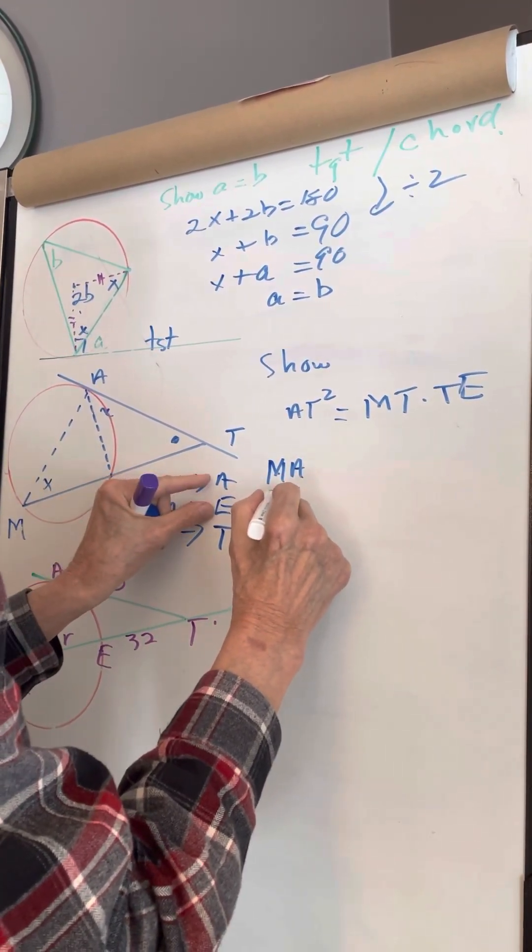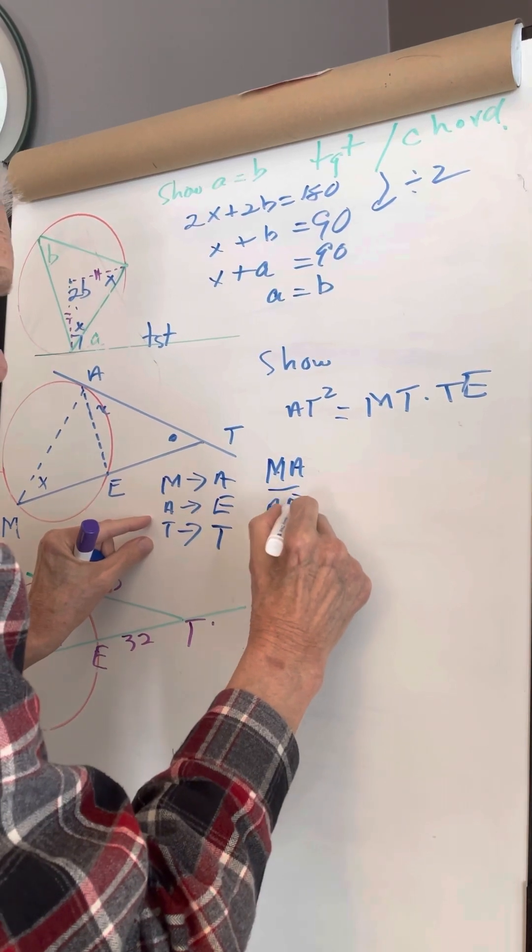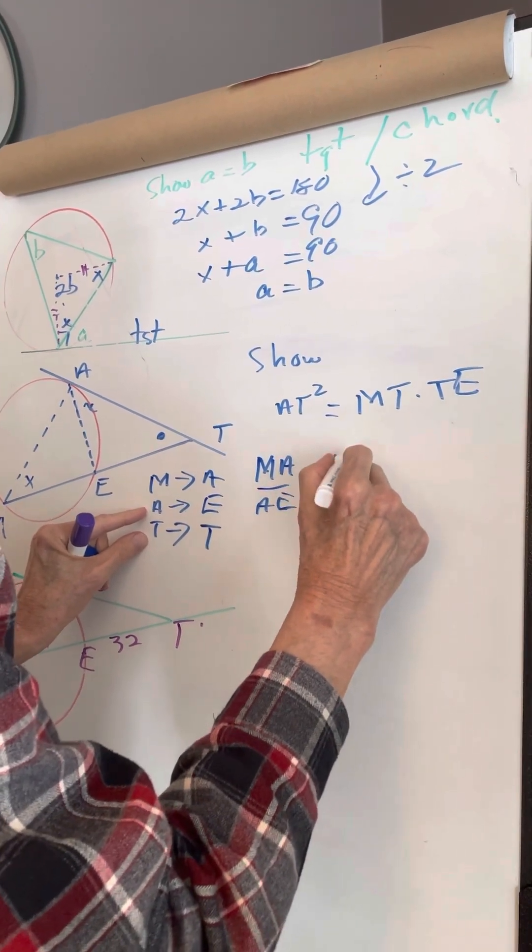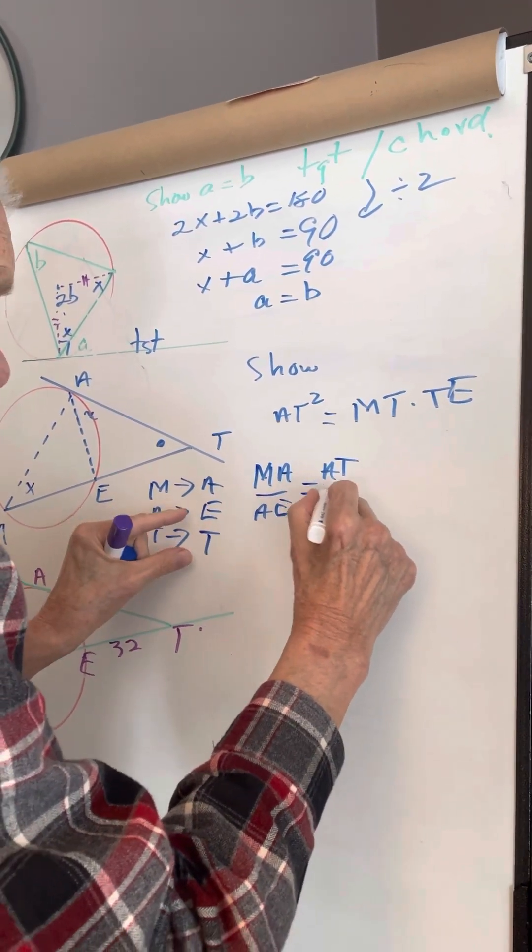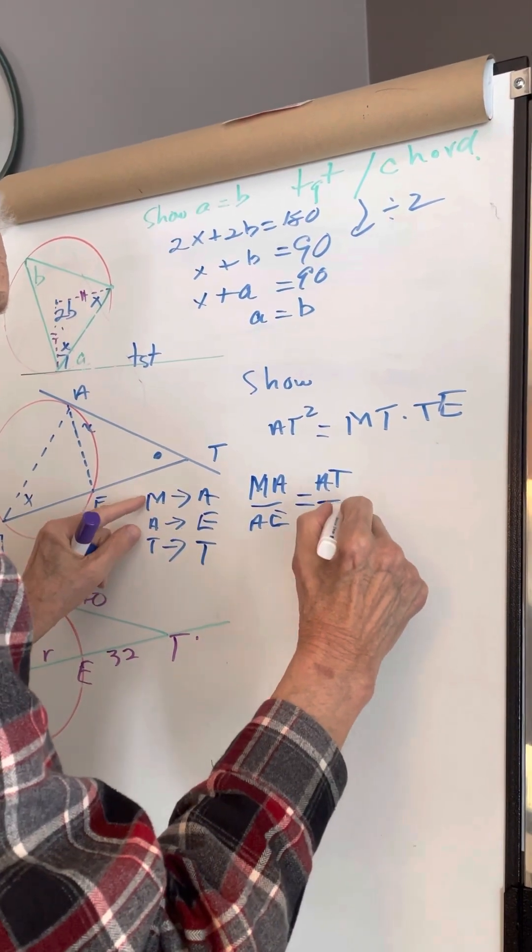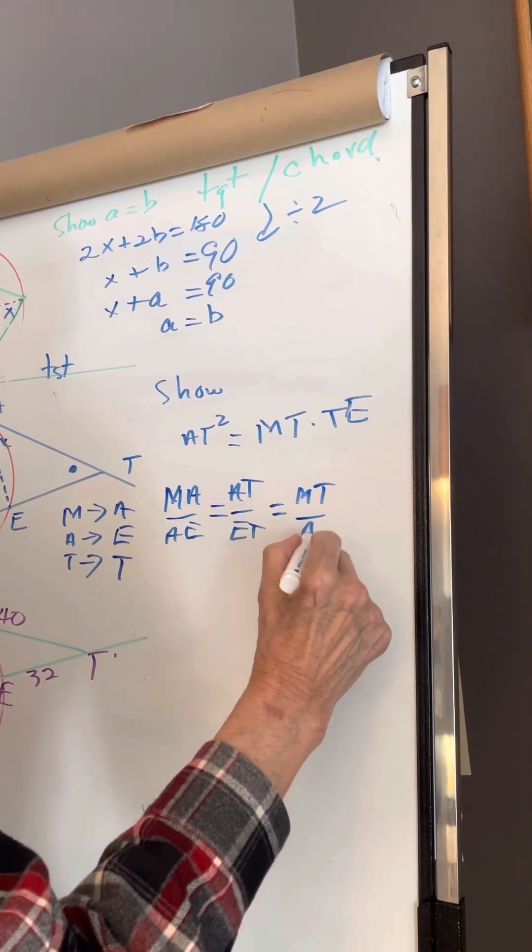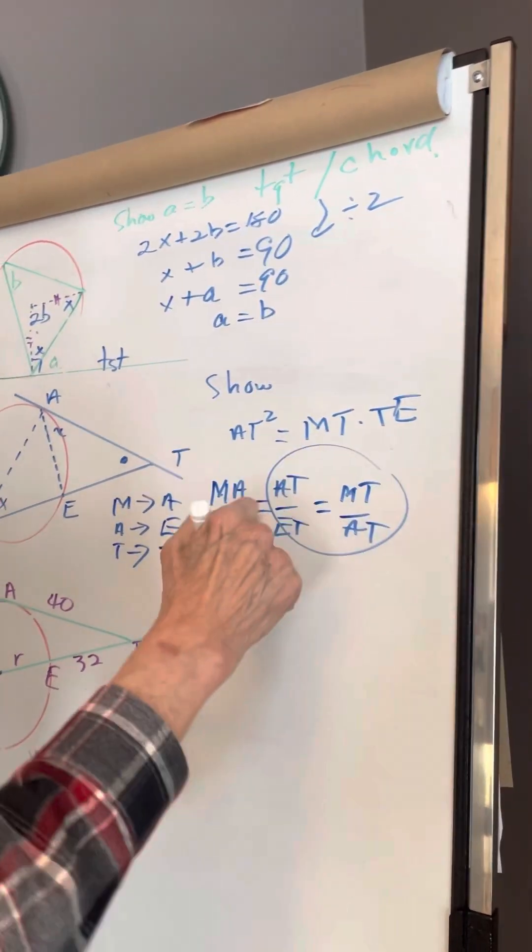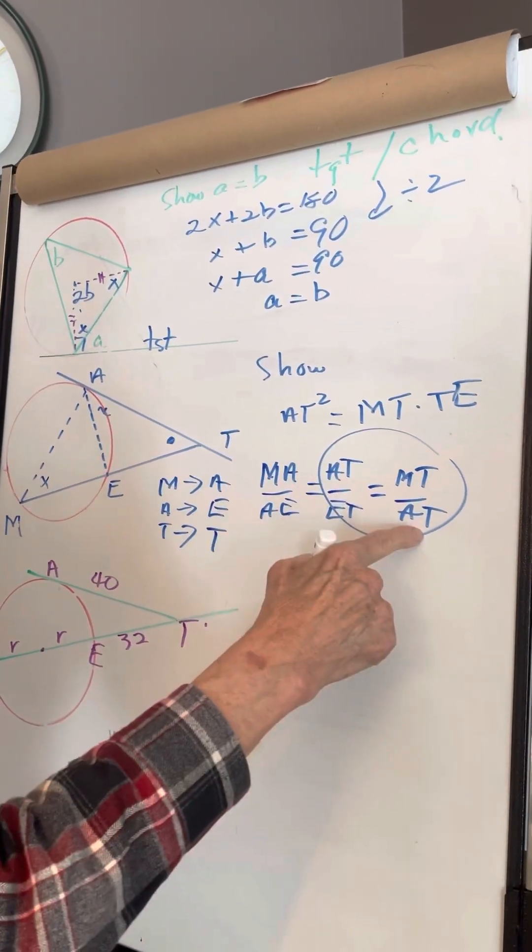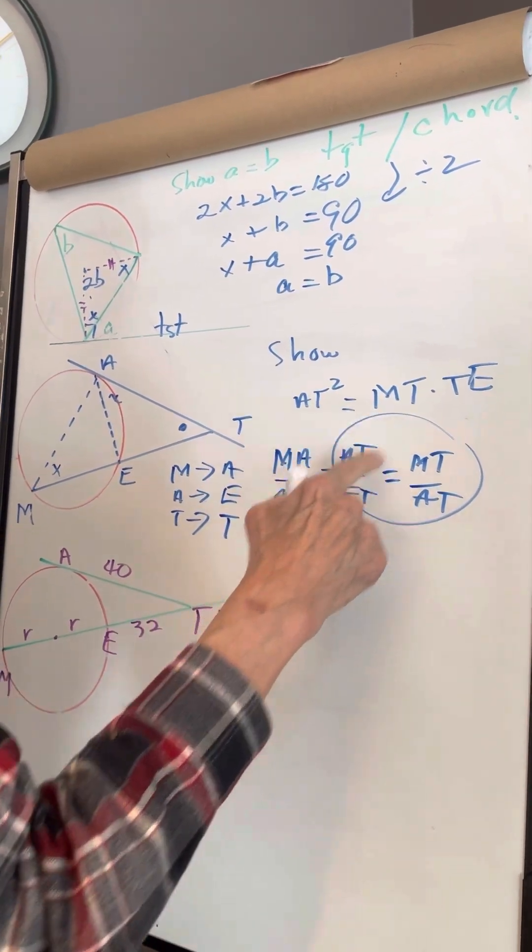MA is to AE as AT is to ET as MT is to AT. And here we see that AT² is equal to MT times TE.